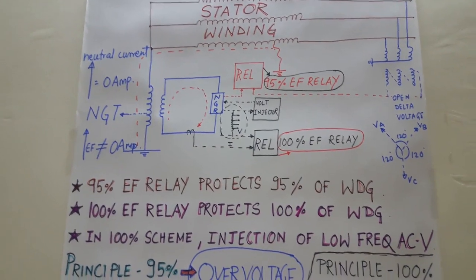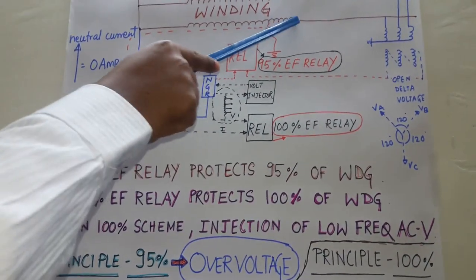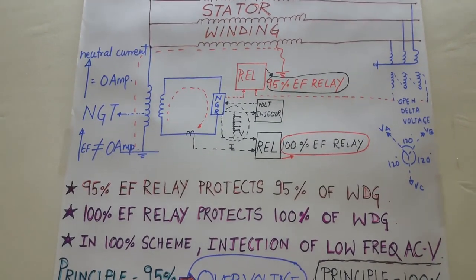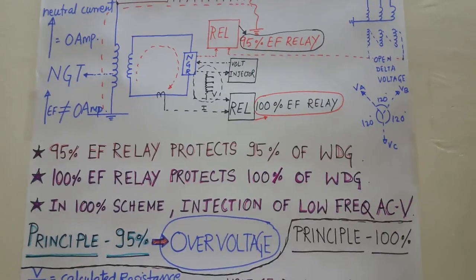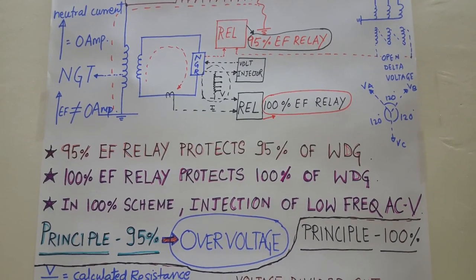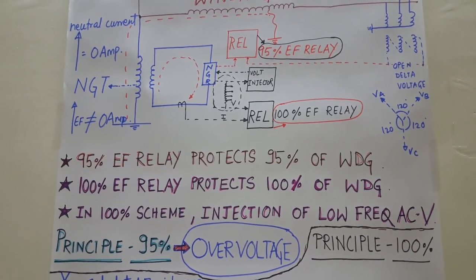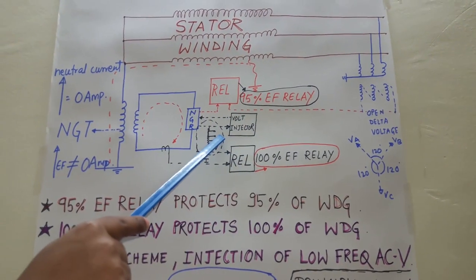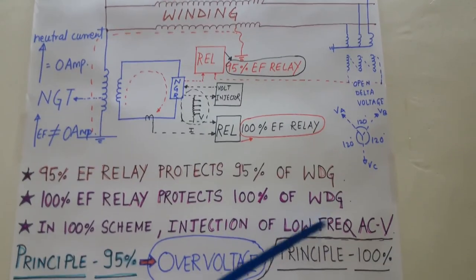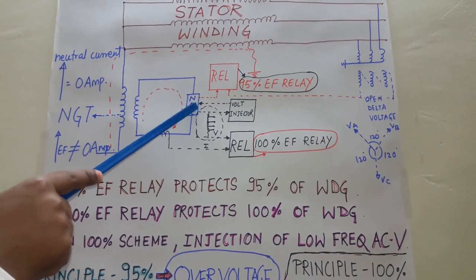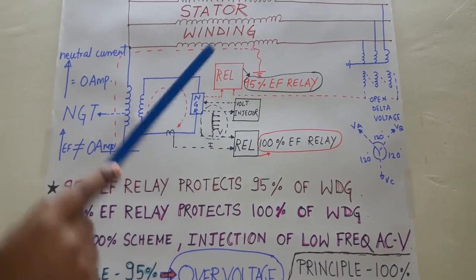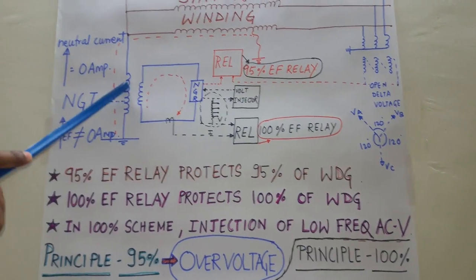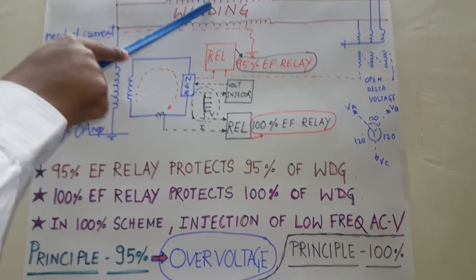So we have to provide one more extra scheme for protecting the entire 100% winding. This scheme is also known as the voltage injection principle. In the voltage injection principle, we have a voltage injector. This voltage injector injects a low frequency signal into the NGR — a low frequency AC voltage. This low frequency voltage is passed to the NGT primary and from there it is passed to the stator winding.